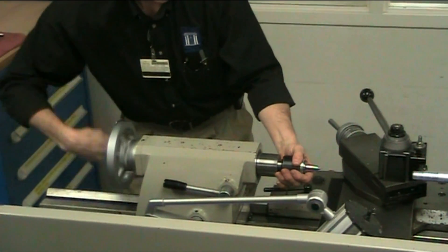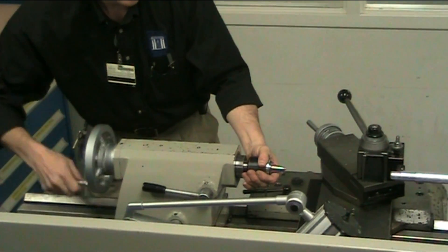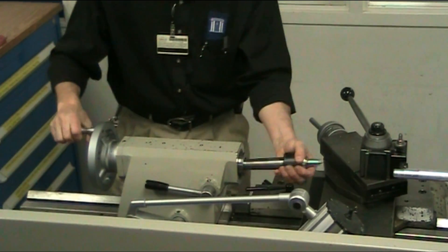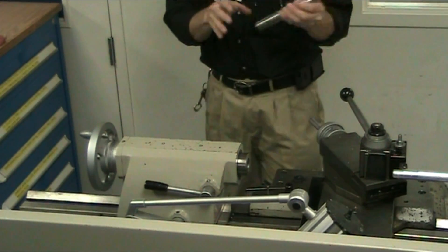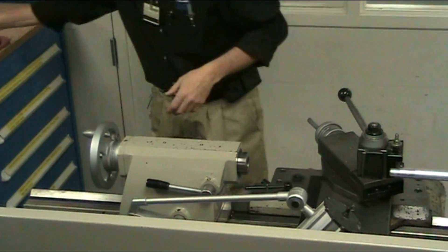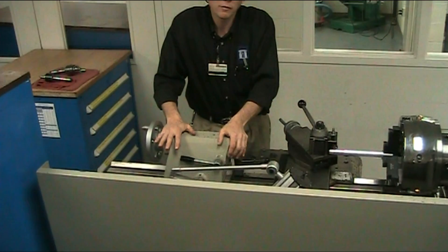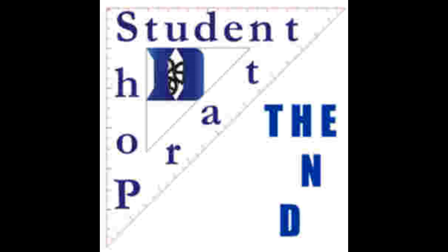You crank it back till it feels resistant and you pop it just a little bit, and it pops it out of the taper and it comes out. That's pretty much it for how to use the tail stock on this particular lathe.